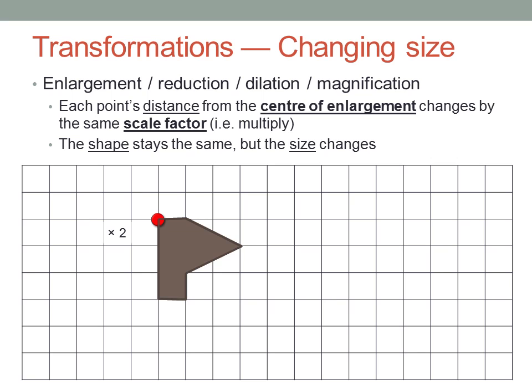Each point in the shape has its distance from the centre of enlargement changed by the same factor, called the scale factor. The word factor should remind you to multiply the length by the scale. The angles in the shape will stay the same, but the size will change. Every side's length will be bigger or smaller by the same scale factor.